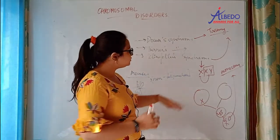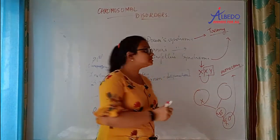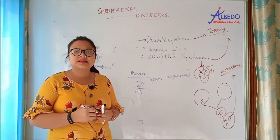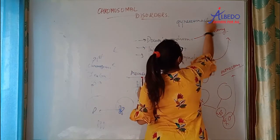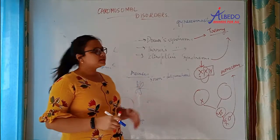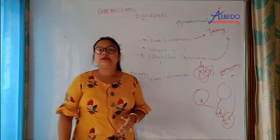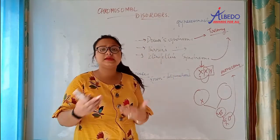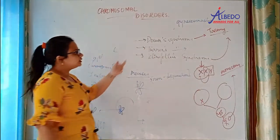Next, in Klinefelter syndrome, the genotype is XXY, so Y is present — that is male. Because it has 2 X chromosomes, female characteristics appear. This is called gynecomastia — breast development in males. The testes will be rudimentary because there is a female pattern. You also get a female pubic hair growth pattern. These are the features of Klinefelter syndrome.